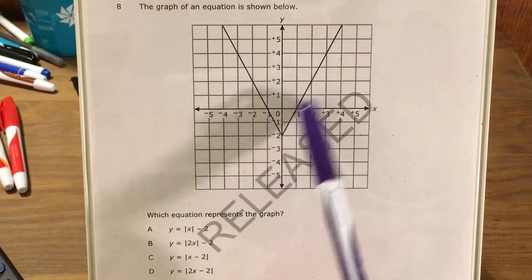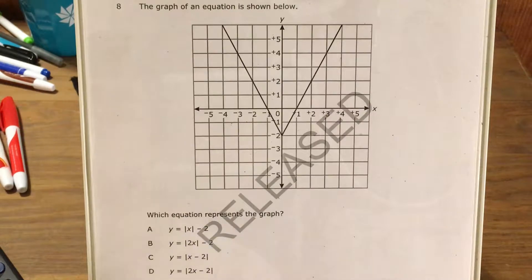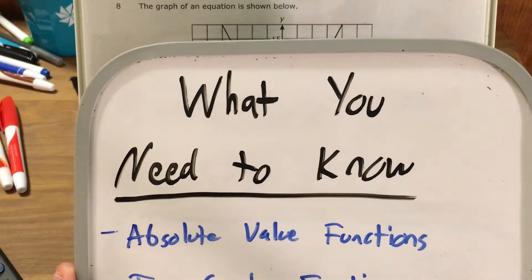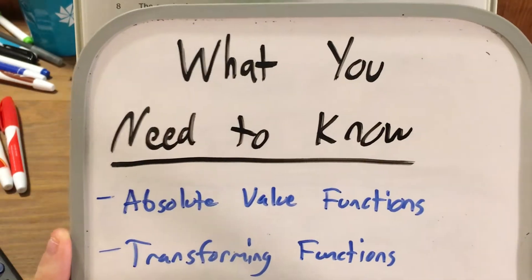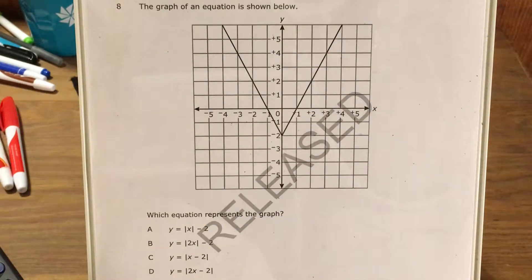The question gives us the graph of an equation, and we're supposed to figure out which equation represents this graph. Now since it looks like a V, you can probably guess that it's an absolute value function, and we're going to have to deal with transforming functions in some way.